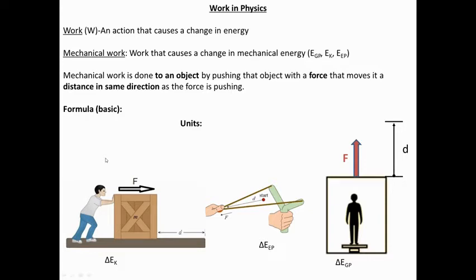We've been talking about different types of energy the last couple of weeks. Last class, we talked about mechanical energy — energy that can only be changed by putting a force on an object. Mechanical work is work that causes a change in mechanical types of energy, which would be gravitational potential energy, kinetic energy, or the elastic potential energy that you have when you stretch an object.